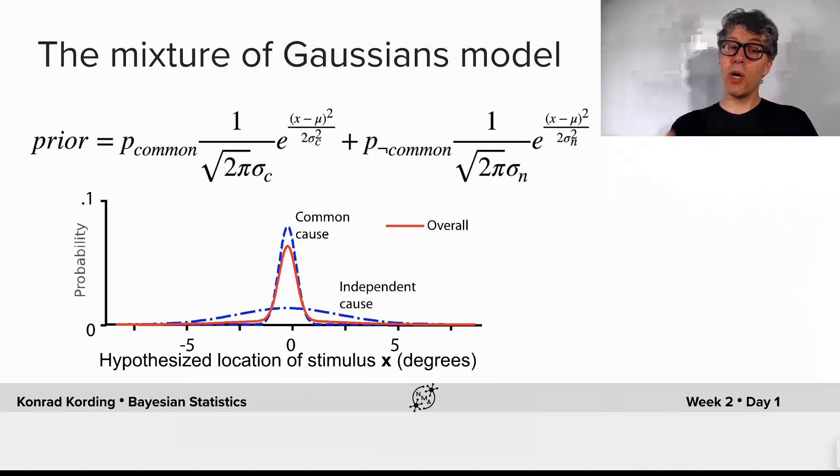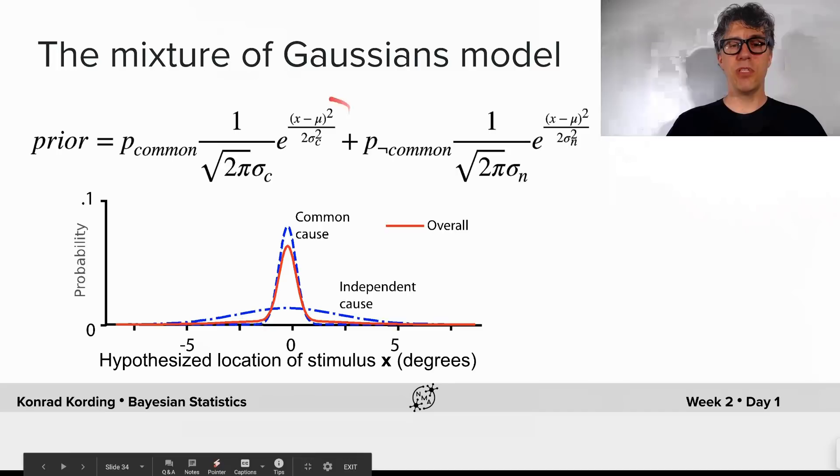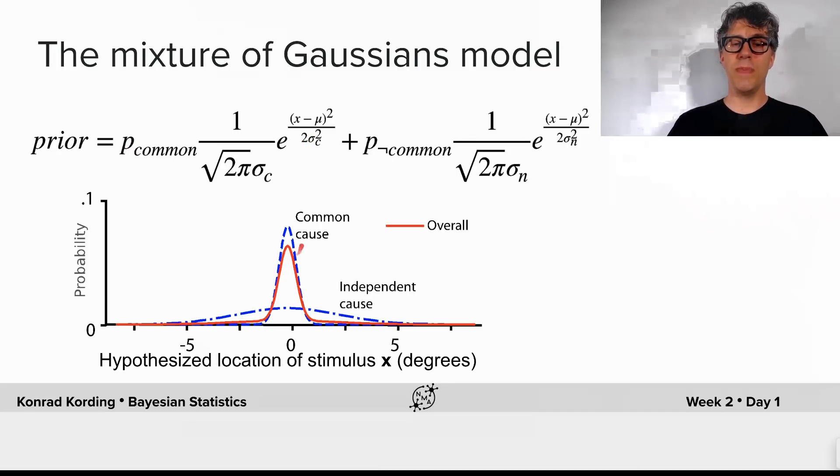Now, how should we model this mathematics here? Well, we can say we want to have a mixture of Gaussians model, where we have one Gaussian that describes what happens when they're close to one another. Now here, the standard deviation will be small. This is this narrow standard deviation. And here, the not-common case, or the independent case, where the standard deviation will be very large. We might even want to believe that it's arbitrarily large.